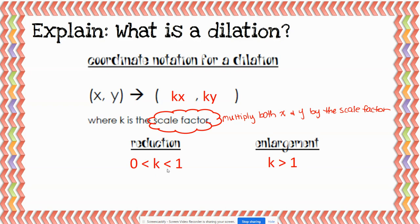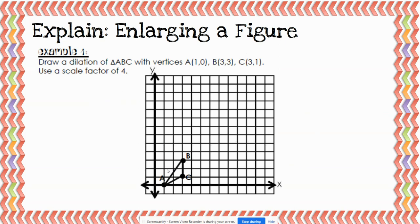Example one says: draw a dilation of triangle ABC that has vertices at A(1,0), B(3,3), and C(3,1). We are going to use a scale factor of four. So k equals four. Because our scale factor is four, we have to take each point and multiply the x value and the y value by four. Our rule is that (x, y) becomes (4x, 4y).